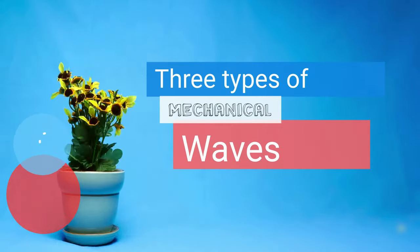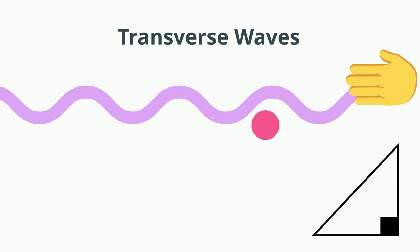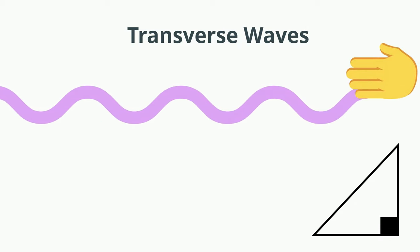There are at least three different types of mechanical waves. A transverse wave is one in which the oscillations are at a right angle to the wave movement. Notice that as the hand goes up and down, the wave moves at a right angle to the movement.